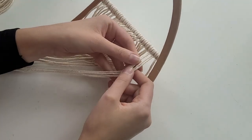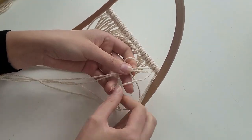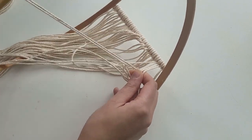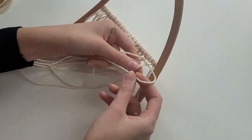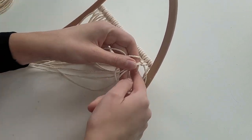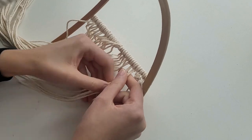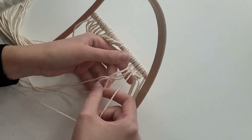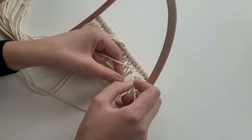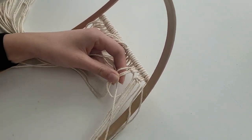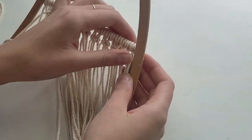I take two first cords from the right and put them on the side. I take next four cords and create square knot. This whole design will be done with the same square knot so once you learn this knot it will all go nicely and smooth. Then I take next four cords and create another knot and I repeat this process all the way till I reach the other hoop. First row of square knots is ready.